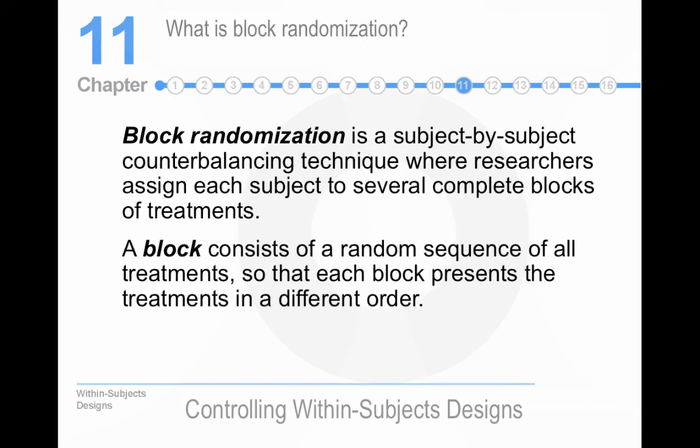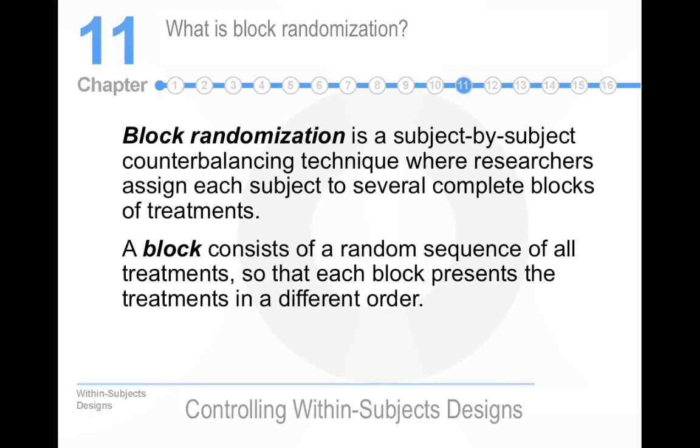Block randomization is subject-by-subject counterbalancing. You give them blocks of treatments. So it's a different random sequence, but you're still in each treatment condition multiple times. Each person is in each treatment several times. This results in a long duration, expensive, or boring procedure. Yep, that's why no one uses it. And I'm glad that we're taking so much time talking about something that no one uses.